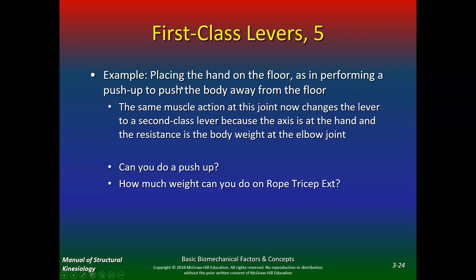Placing the hand on the floor as in a pushup changes the lever to a second class lever, because the axis is at the hand and the resistance is the body weight at the elbow joint. Which is more efficient — a pushup or skull crushers? If you weigh 150 to 200 pounds, you can do a pushup moving that much weight. But can you do 150 to 200 pounds on an overhead triceps extension? No way. You can see how a second class lever is more efficient — you can lift a lot more weight. Pushups are a great exercise, whereas overhead triceps extensions put your muscles at a mechanical disadvantage.